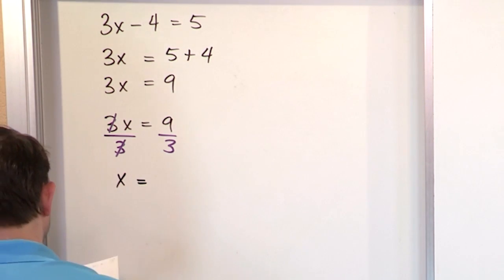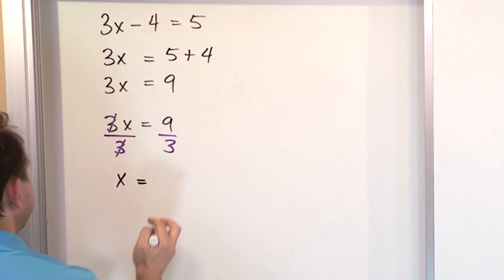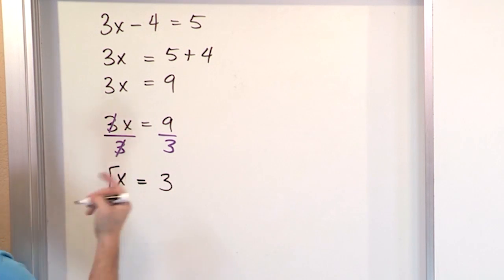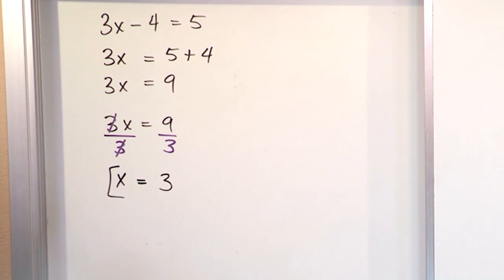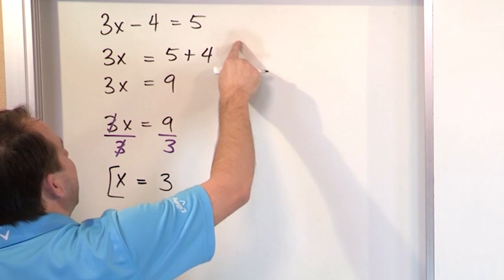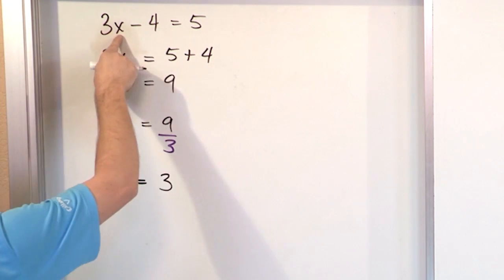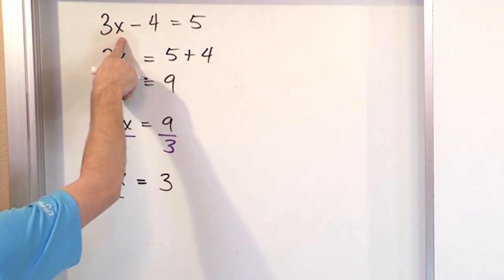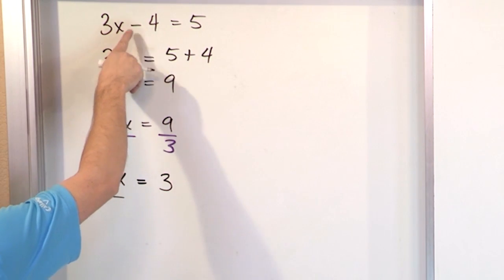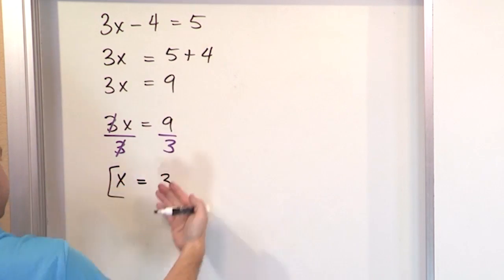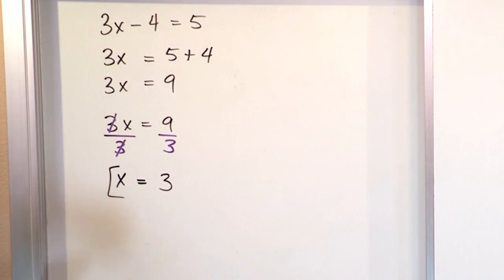On the right, 9 divided by 3 is 3, so the answer is x equals 3. To check: substitute 3 for x — 3 times 3 is 9, and 9 minus 4 equals 5. That confirms it's the correct solution.